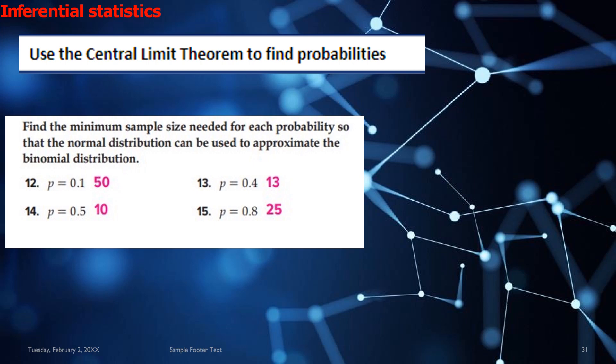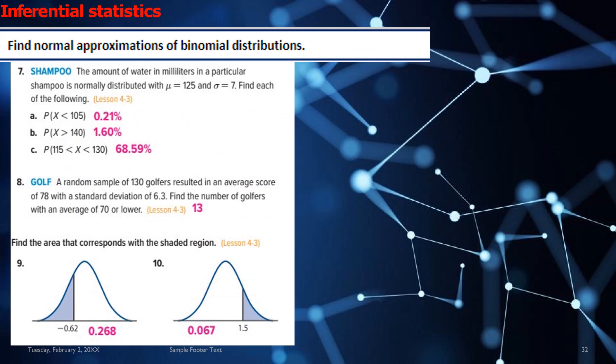Moving on, use the central limit theorem to find the probabilities. So for question 12 to 15, the minimum sample size needed is given to you in pink. So that you can get your answers for the normal distribution and normal approximation of binomial distributions for questions 7, 8 and 9.